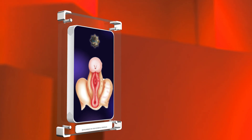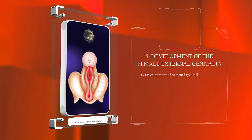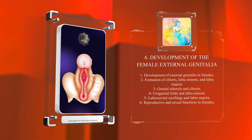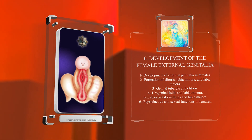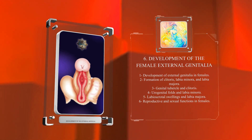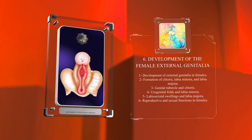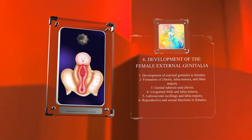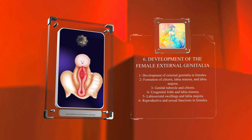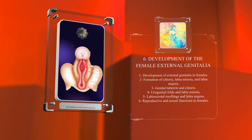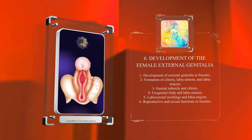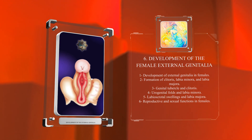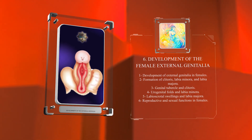In females, the development of the external genitalia involves the formation of the clitoris, labia minora, and labia majora. The genital tubercle gives rise to the clitoris, which becomes more prominent during development. The urogenital folds differentiate into the labia minora, while the labioscrotal swellings fuse to develop into the labia majora. These structures are essential for reproductive and sexual functions in females.